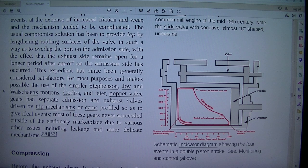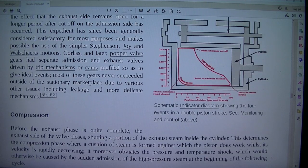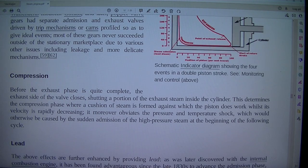Corliss, and later, poppet valve gears had separate admission and exhaust valves driven by trip mechanisms or cams profiled so as to give ideal events. Most of these gears never succeeded outside of the stationary marketplace due to various other issues including leakage and more delicate mechanisms.